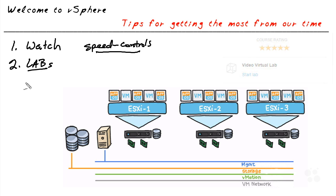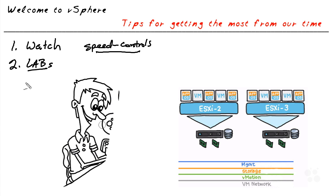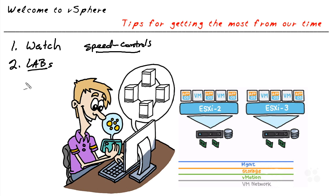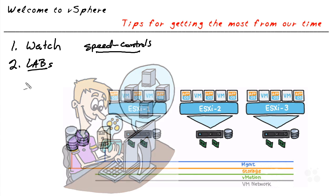What has proven to be successful for a lot of learners is to watch the content once all the way through, and then go back through it again as you walk through the hands-on lab. Having two screens or two different devices as you go through the nugget is quite helpful. For example, you could play the video on a mobile device, starting and pausing as needed, while being logged on through the computer to do the hands-on practice in the provided hands-on lab.